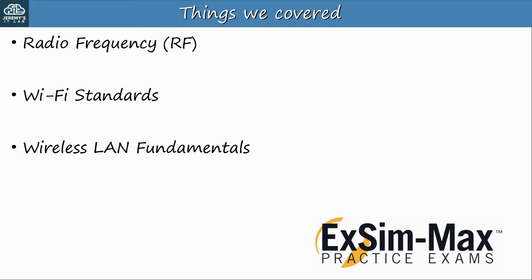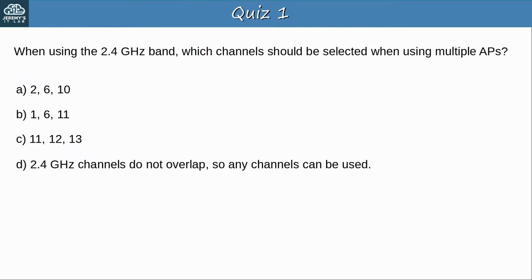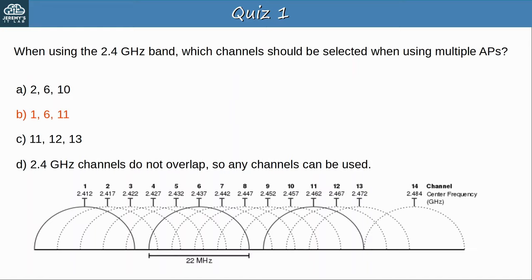Quiz question 1: When using the 2.4 GHz band, which channels should be selected when using multiple APs? The answer is B — 1, 6, and 11. As this diagram shows, channels 1, 6, and 11 do not overlap, so even if APs are near each other, interference can be avoided.